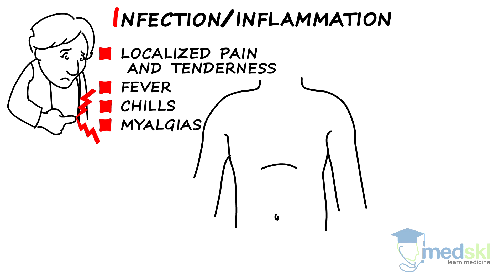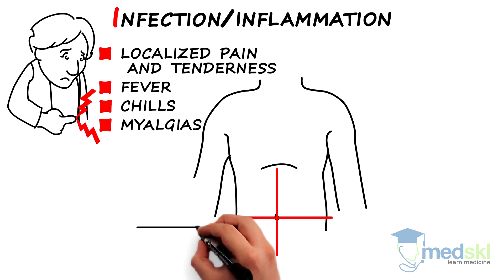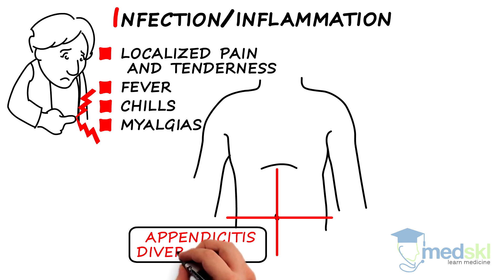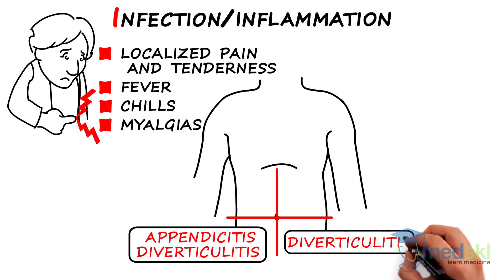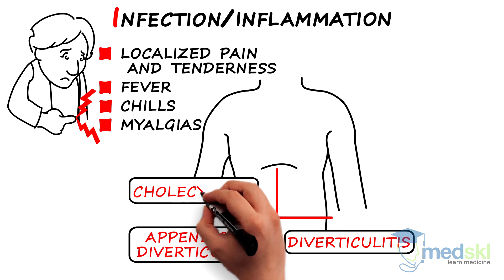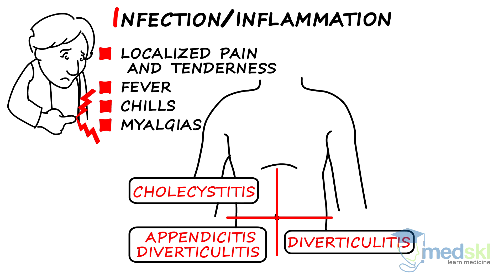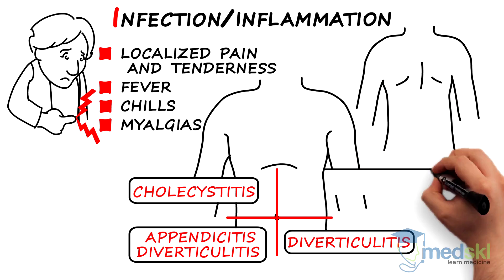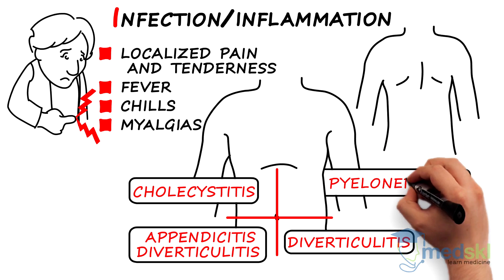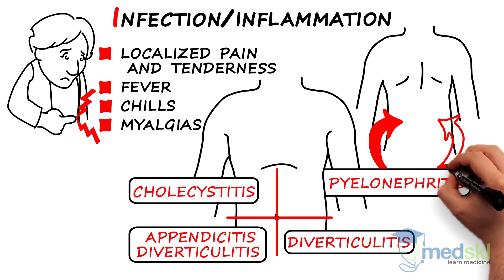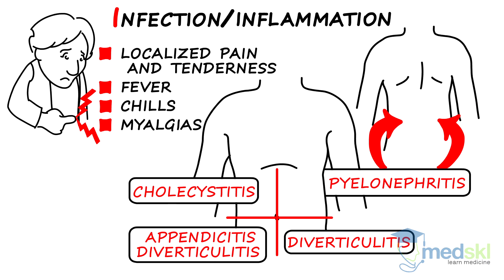In the right lower quadrant, think of appendicitis. In the right or left lower quadrant, diverticulitis. In the right upper quadrant, cholecystitis. And in either flank, pyelonephritis. Pancreatitis is more of an inflammatory condition and causes upper abdominal pain, which is usually epigastric.